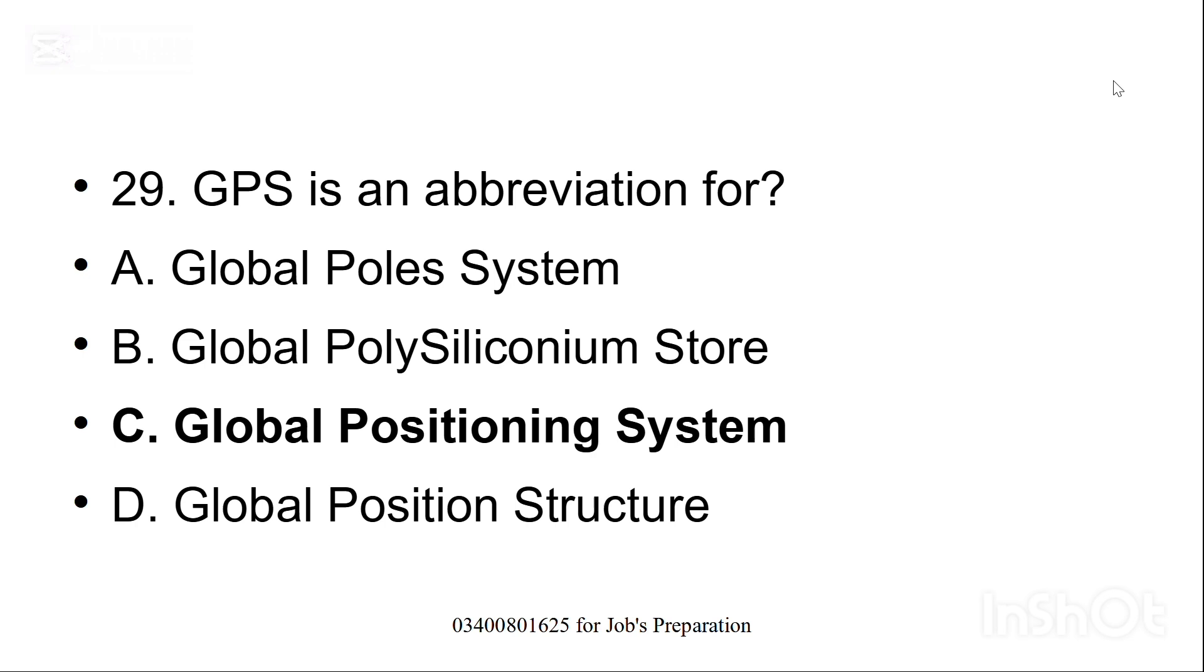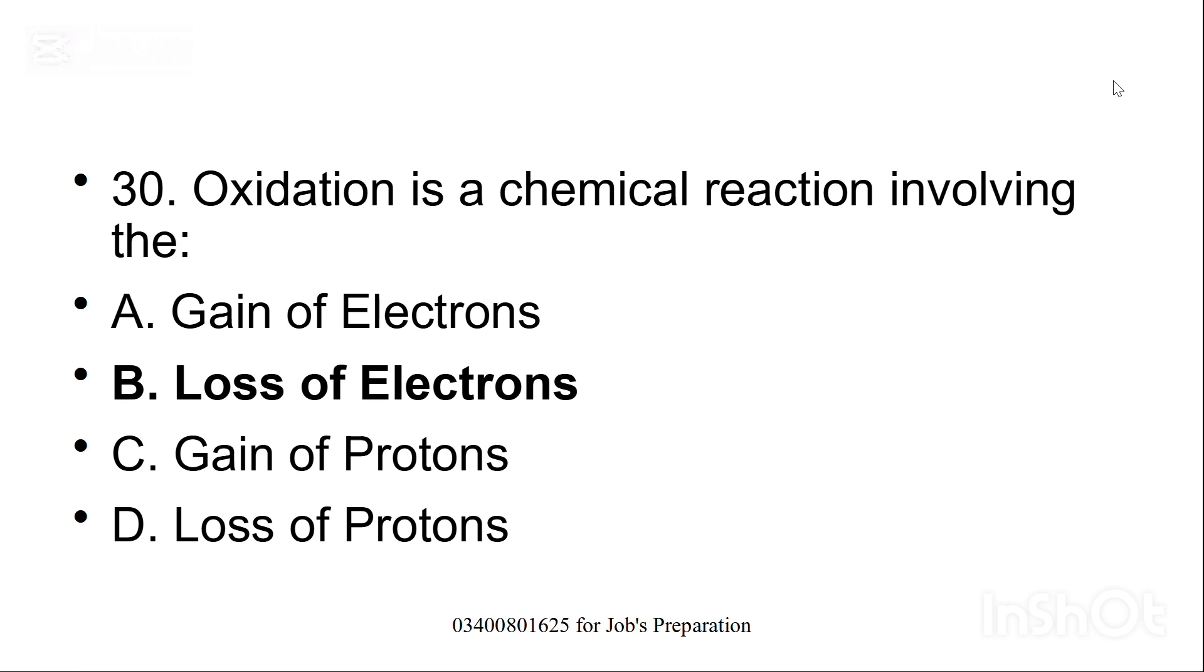Yeh question class 6 ke syntax book se liya gaya hai. Oxidation is a chemical reaction involving the, oxidation is a chemical reaction jis mein kya hota hai? Option B, loss of electrons. Aur ek chemical reaction hota hai reduction. Reduction mein kya hota hai? Woh aap zarur comment section mein batayein.